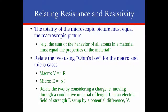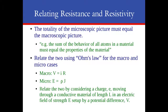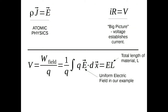At the microscopic level, there's a relationship between the current density one can set up and the electric field placed on the material to establish that current density. So at the microscopic level, E equals rho times J. At the macroscopic scale, we have Ohm's Law: a potential difference will establish a current, and that current will depend on the resistance of the material. We want to find the connection between rho — the microscopic constant of proportionality — and R, the macroscopic resistance.